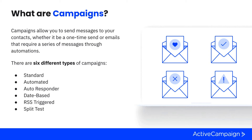In our example we'll focus on the standard campaign, but note there are six different types of campaigns. Your automated type takes you straight to the automation builder. Your autoresponder triggers as soon as somebody subscribes to a list. A date-based trigger fires when a contact meets the condition of a date they've given you. RSS triggered is for bloggers. And split testing is a great way to test different campaigns against each other to see what's performing better.